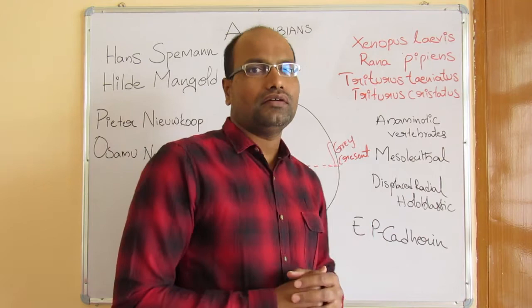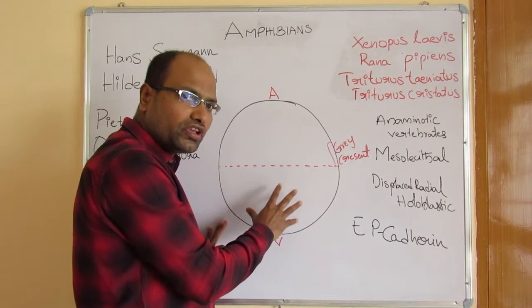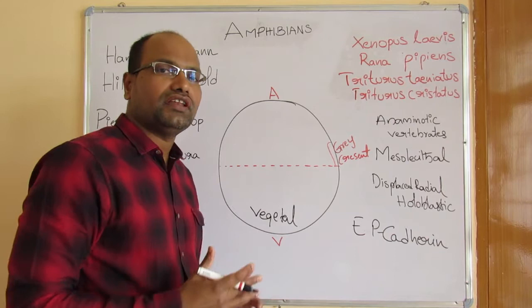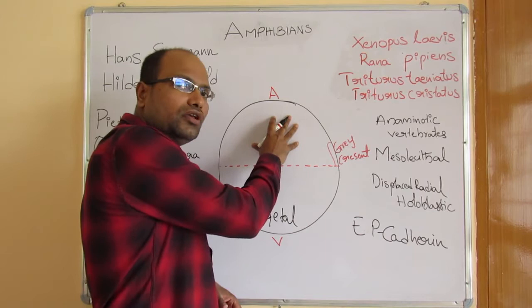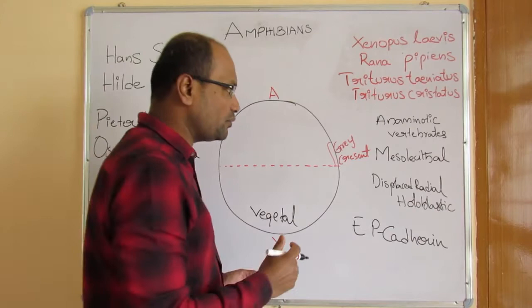Looking at the egg structure: the area where the yolk is present is called the vegetal pole or vegetal hemisphere, and the area opposite to it — inside the egg where yolk is sparse — is called the animal pole. You will also see in many textbooks a structure called the gray crescent, which we will discuss in a later video.